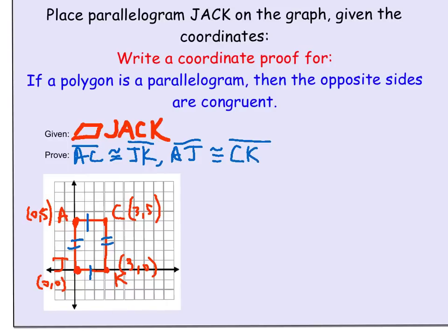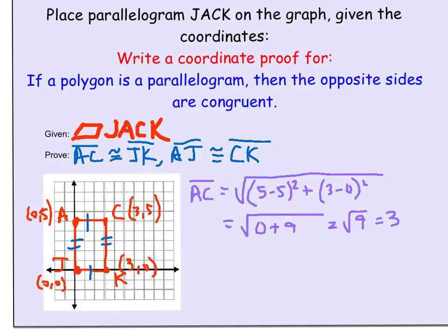Just like the last proof, we'll use the distance formula to show these segments are congruent. Starting with A and C, after using the distance formula for AC, it comes out to 3. Since we have horizontal and vertical segments, instead of using the distance formula, we could actually just count on the graph.